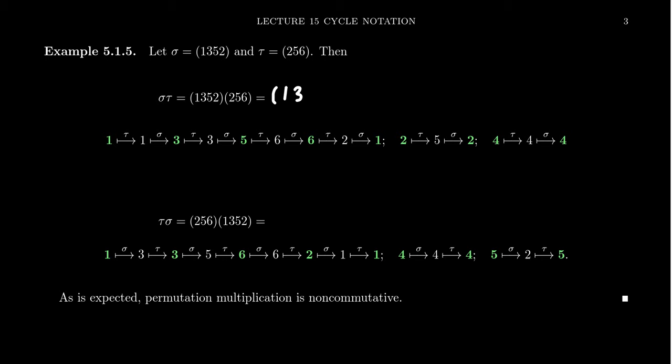What does sigma tau do to 3? Tau sends 3 to 3 because 3 doesn't appear in tau, so 3 is fixed. Then sigma sends 3 to 5, so the composite sends 3 to 5. What happens to 5? Tau sends 5 to 6, and sigma doesn't do anything to 6, so the composite sends 5 to 6.